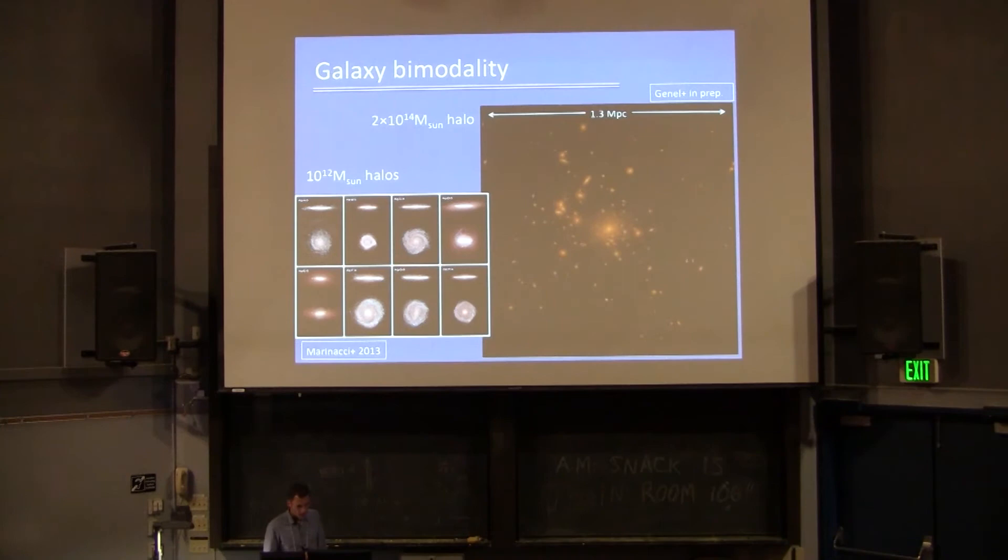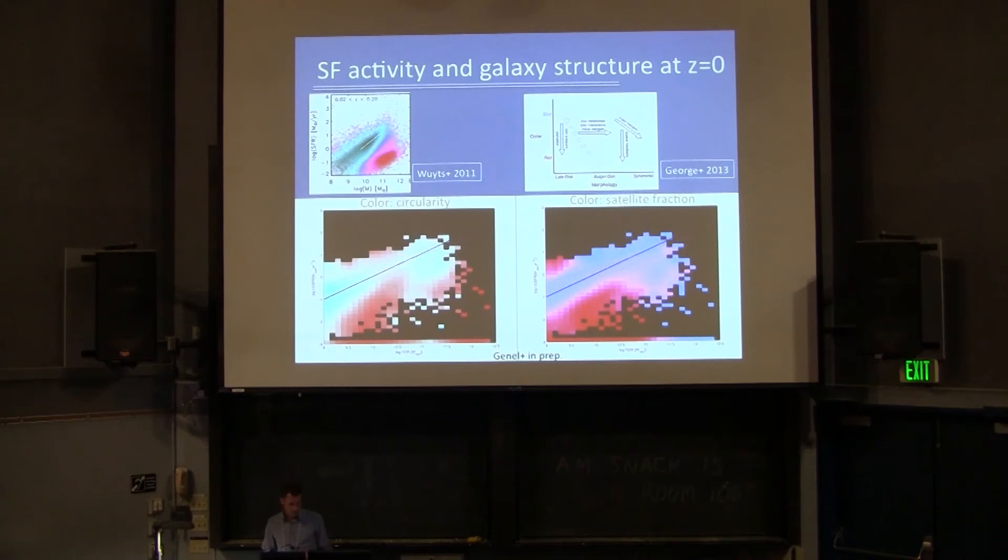Another nice feature of the simulations we have is that we have galaxy bimodality. This shows the stellar image of our most massive halo, 2 times 10 to the 14 solar mass halos. You see the stars, these galaxies are red and dead. On the other hand, in Milky Way-like halos, we get very nice disks. These are specifically even higher resolution than what we have in the cosmological box. These are zoom-in simulations with the same physical model by Marinacci from Volker's group. But we get these kind of very nice disks also in our box.